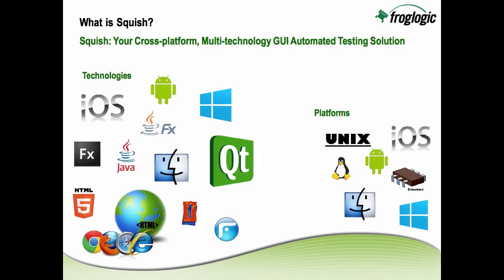Now let's talk about Squish. Squish is a cross-platform, multi-technology GUI automated testing solution. We work across different platforms supporting a variety of technologies, and we support those technologies on the platforms on which they are supported. For example, Java — not limited to just Windows or Mac. Maybe you have a Java application that works across Windows, Mac, and Linux, and you want to create a single set of tests that work across all of those platforms. Not a problem. The same applies for any of the other technologies that we support. Tests created on one platform for cross-platform applications will work the same and do not need to be modified when run against other supported platforms.